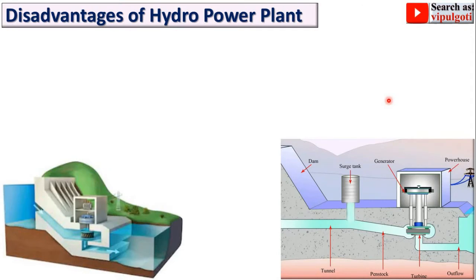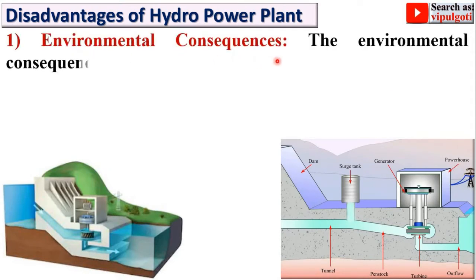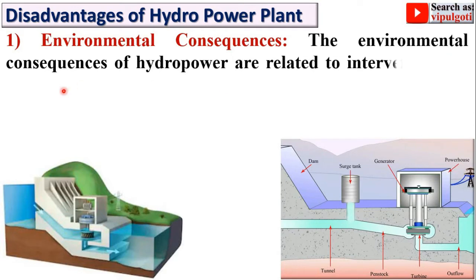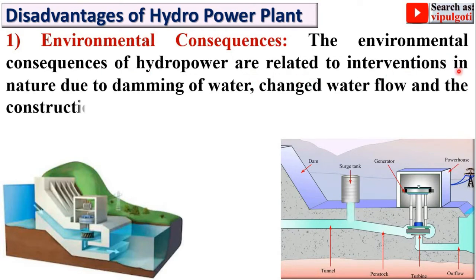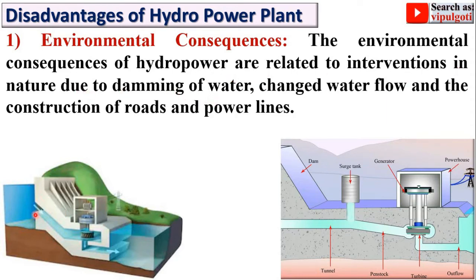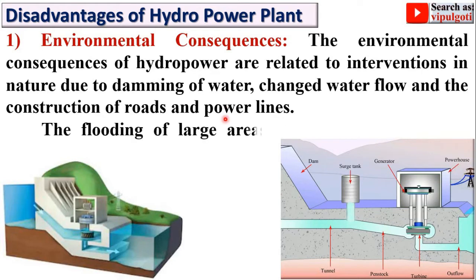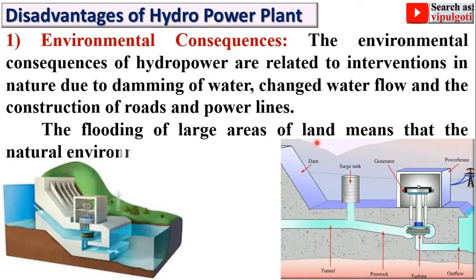Now the disadvantages of hydro power plants. First: Environmental consequences. The environmental consequences of hydropower are related to intervention in nature due to damming of water, changes in water flow, and the construction of roads and power lines. The flooding of large areas of land means that the natural environment is destroyed.